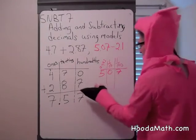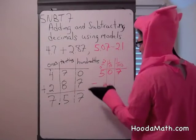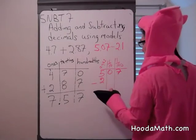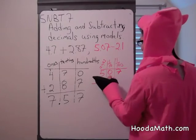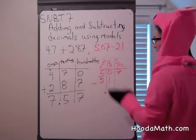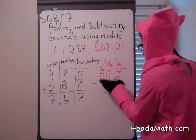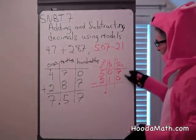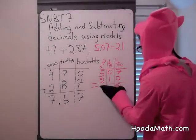Minus two and one tenth: two ones, one tenth. How many hundredths do we have? None, so we put zero. And we subtract: seven take away zero is seven.